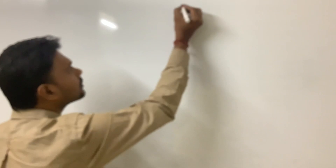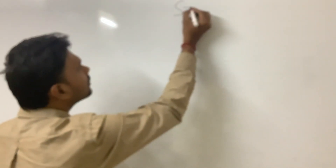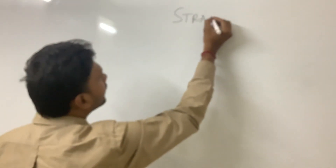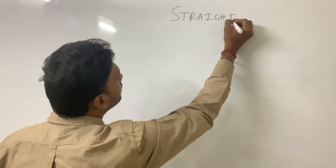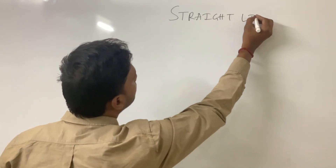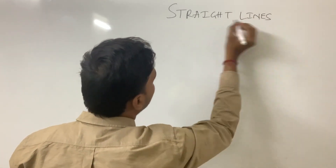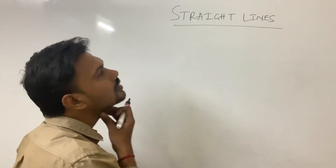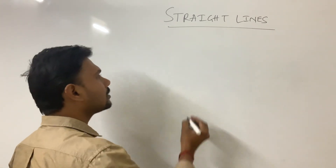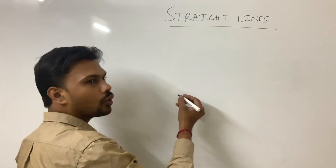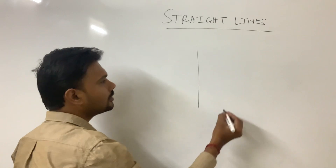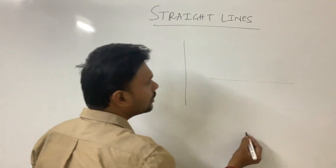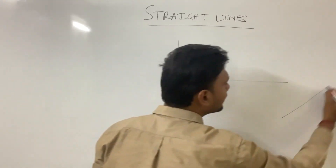Let us try to learn about straight lines. Straight line is a topic which is very important and it is very easy also. Basically, a straight line can be a vertical line, a horizontal line, or an inclined line.